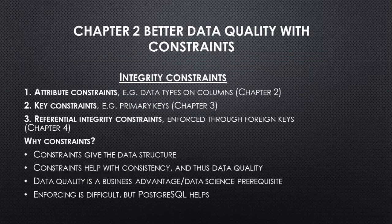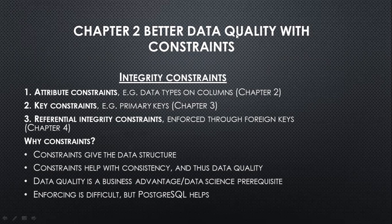In Chapter 2, there is better data quality with constraints. Integrity constraints include: attribute constraints, for example data types on columns; key constraints, for example primary keys in Chapter 3; and referential integrity constraints, enforced through foreign keys in Chapter 4.